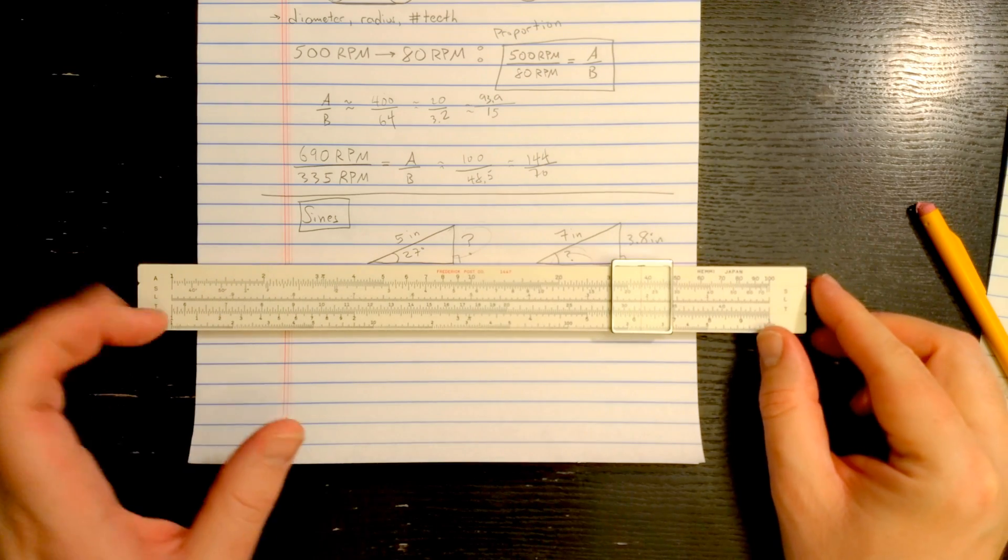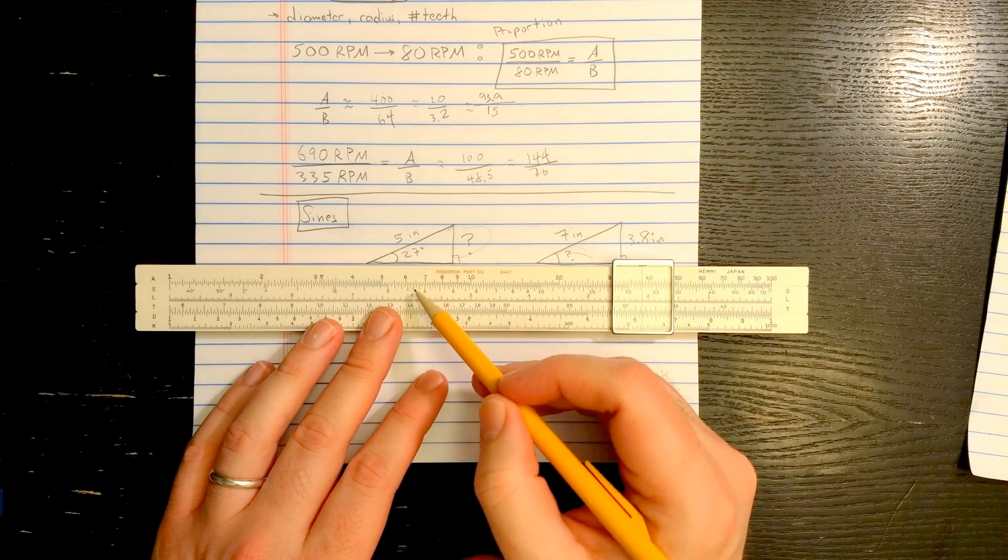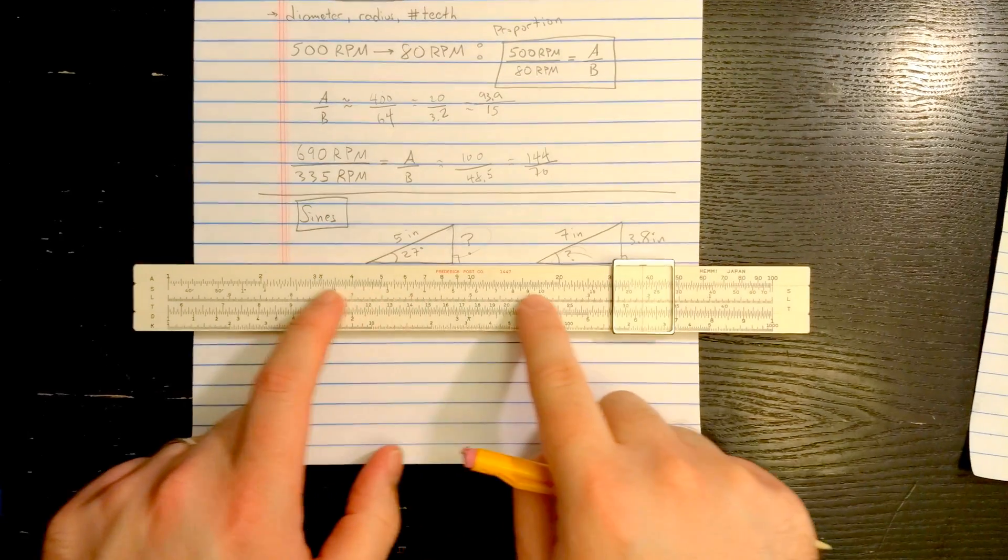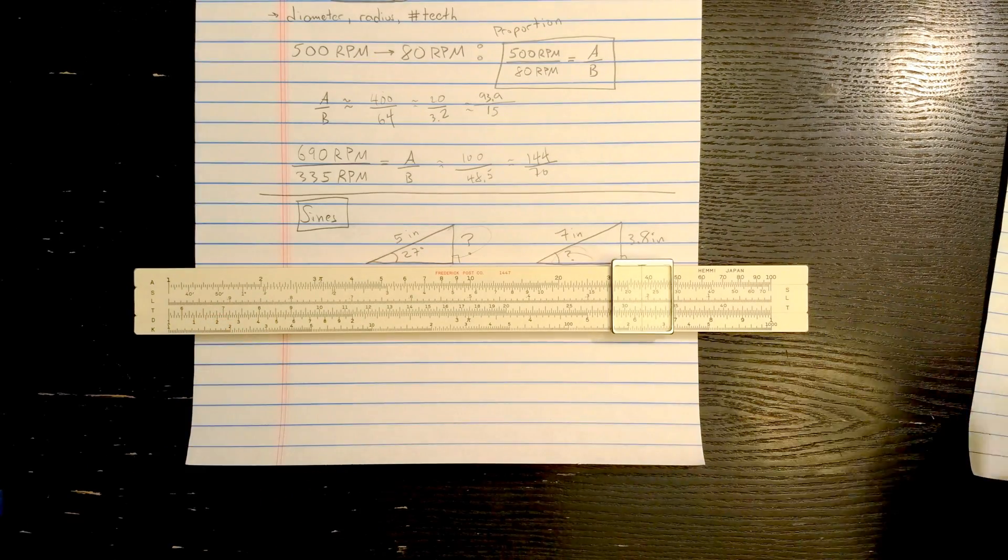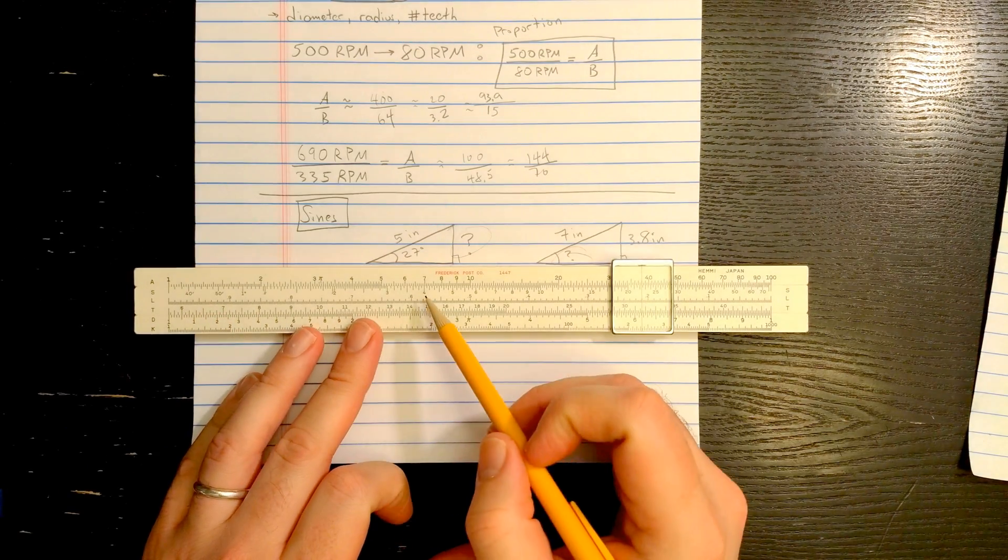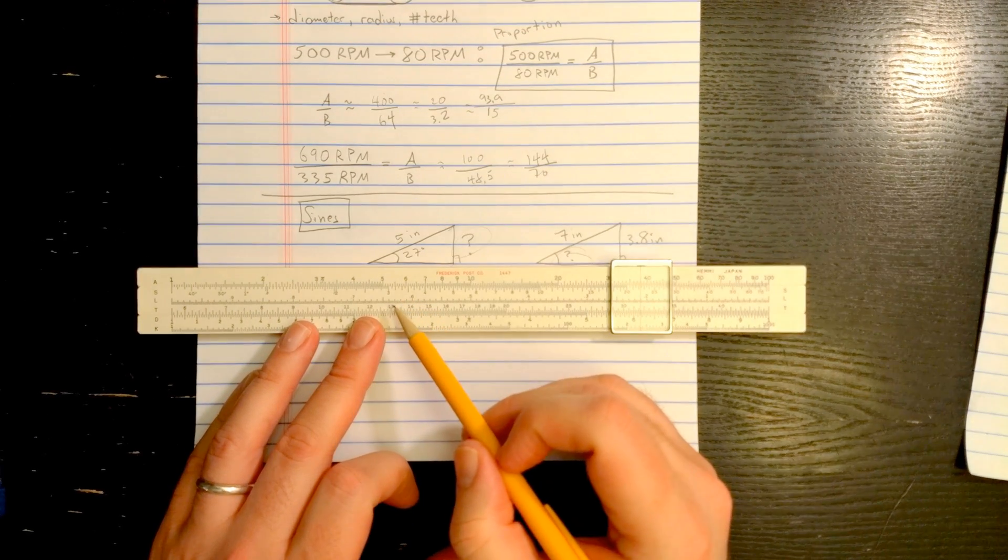Okay, S scale should be used with the A scale, so I'm going to use the top two scales just like I was using, but now we have this S scale which is marked out in degrees. This one is marked out once you get down to less than a degree in minutes.